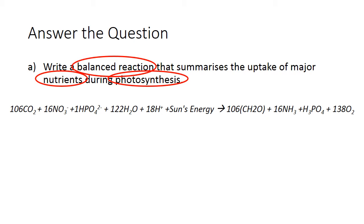The equation takes up nitrate and phosphate in a ratio of 106 carbons, 16 nitrogens, and one phosphate. Other important things: this requires the sun's energy. The reaction only goes one way — photosynthesis is not an equilibrium reaction that can go backwards and forwards. The nitrate and phosphate are converted into organic forms of nitrogen and phosphorus — this is chemically equivalent but it is organic. And we produce oxygen. The equation should also balance.